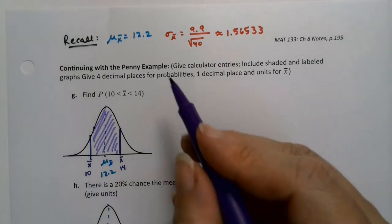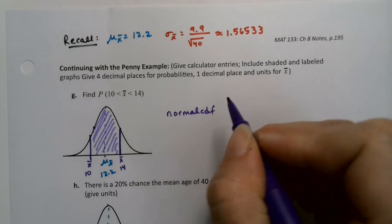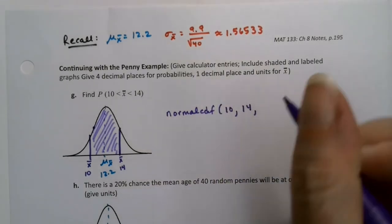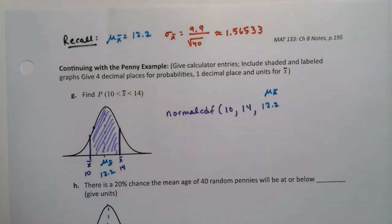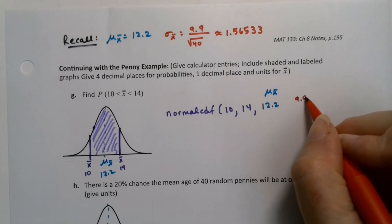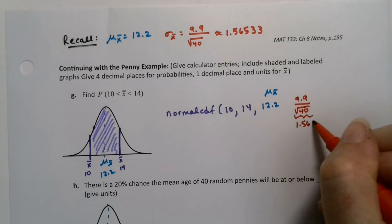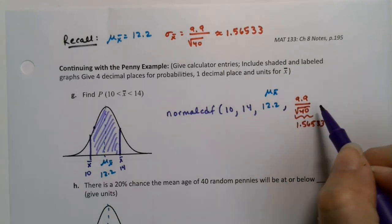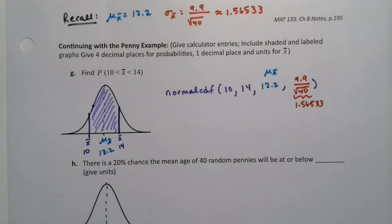Okay, so we just looked at the decision matrix and it said use normal CDF. Lower, which is 10. Upper, which is 14. The center, which is 12.2, that's the mu sub x bar. And the spread is 9.9 over the square root of 40. Or if you prefer, you can use 1.56533. If you're going to use decimals, just make sure you use like five or six decimal places because we want four decimal places for normal CDF. So we don't want to lose accuracy.